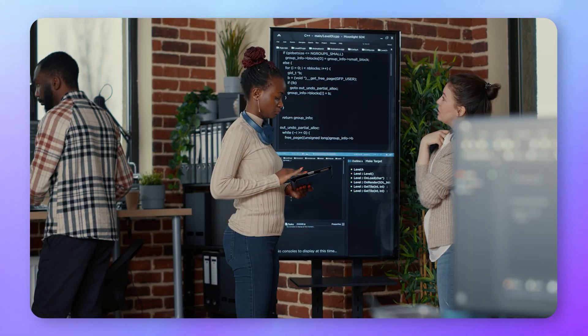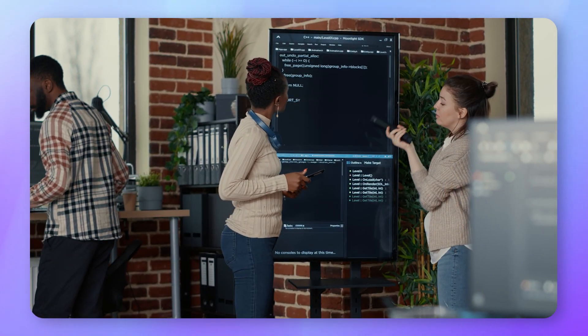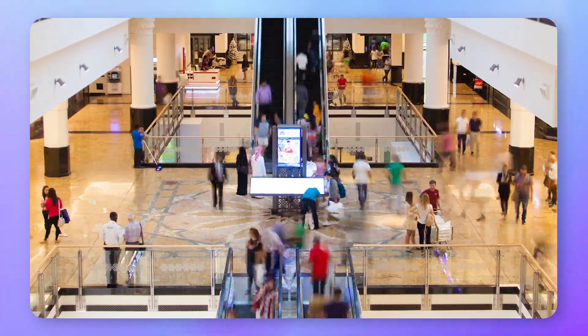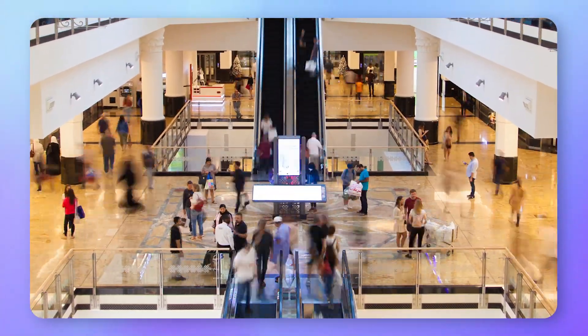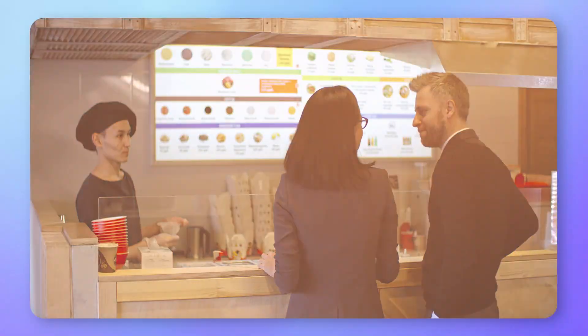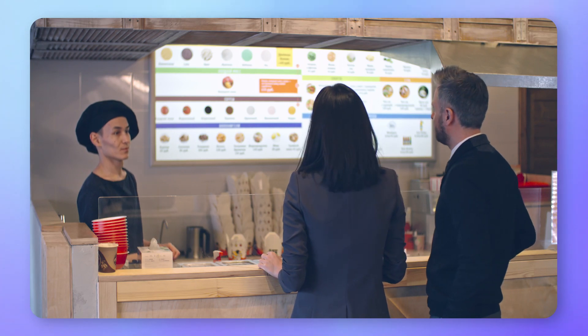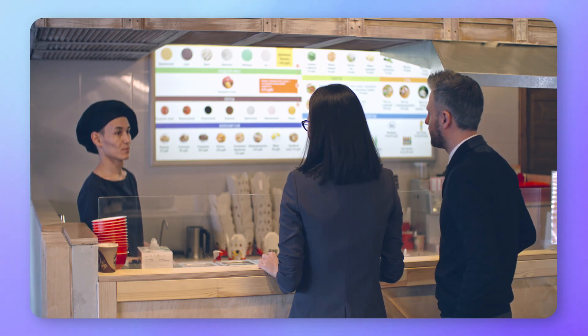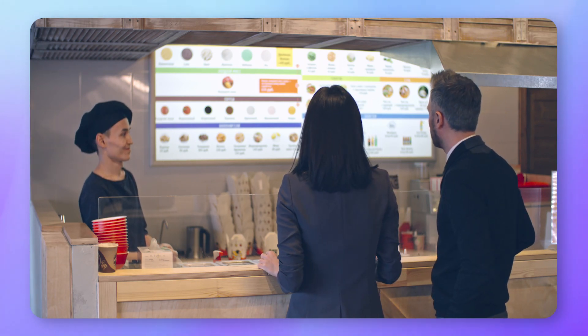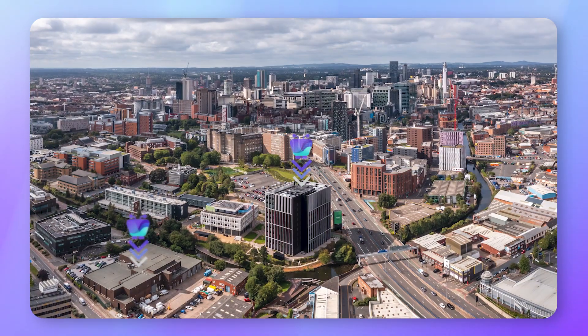Today's enterprise digital signage networks operate under pretty demanding conditions, cycling through round-the-clock content like live data streams, web apps, or 4K video. Displays are often zoned into unique configurations with lots of content layers to keep them dynamic.